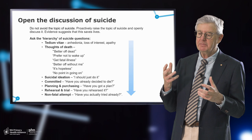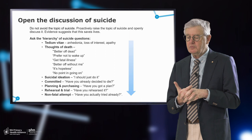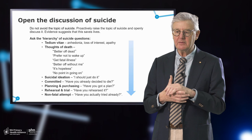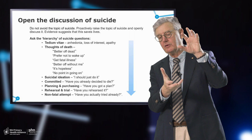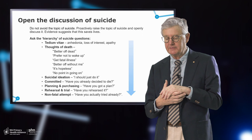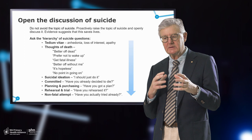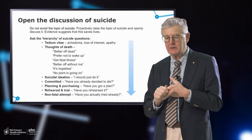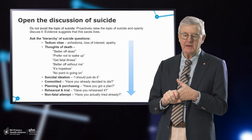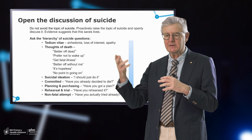We traditionally use a hierarchy of suicidality questions, starting with tiredness with life — a sense of being a bit flat, a bit numb: 'Have you been feeling down lately?' The next step is thoughts about death: 'Have you been thinking about death and dying? Have you been thinking that it would be good to die? I'd be better off dead, or they'd be better off without me.' Thinking about death and mortality, with that kind of negativity, is a sign of suicidal risk.